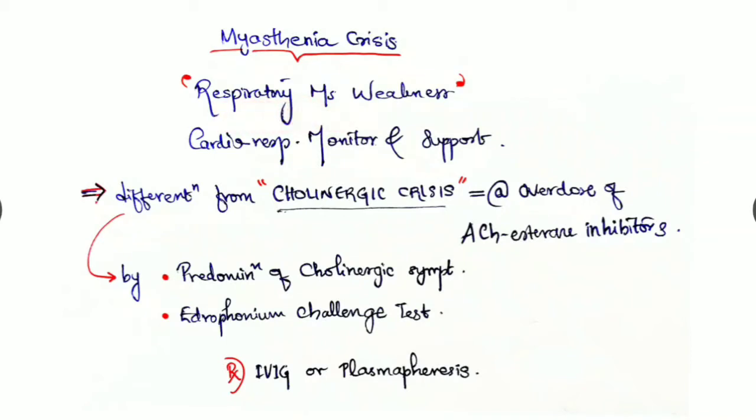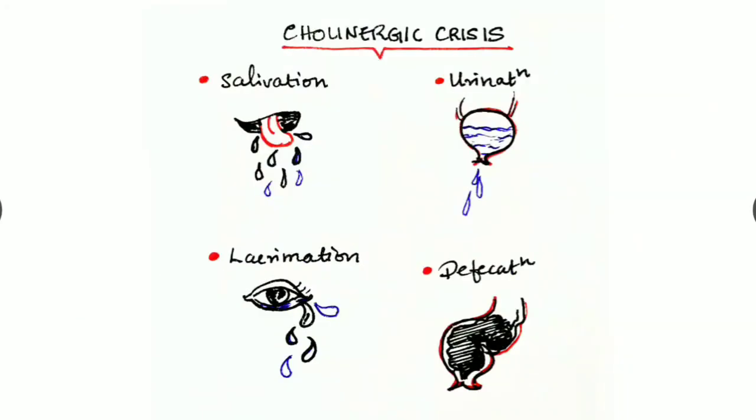In cholinergic crisis there is predominance of cholinergic symptoms: increased salivation, increased urination, increased lacrimation, and increased defecation.